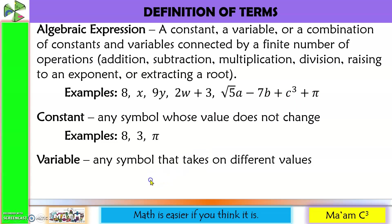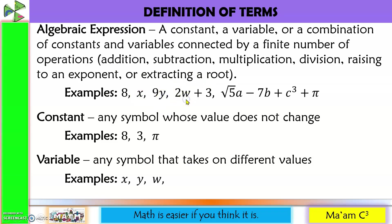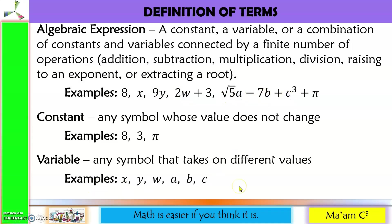Next one, variable. Any symbol, usually a letter, that takes on different values. So here we have x, here is y, w, a, b, and c. These are variables.